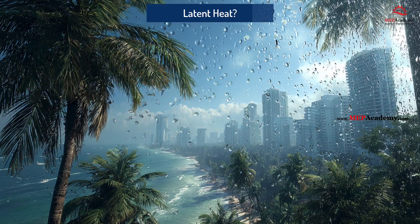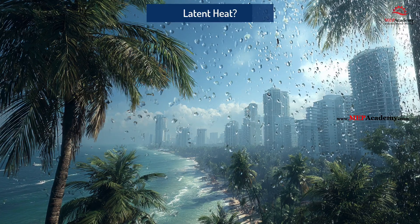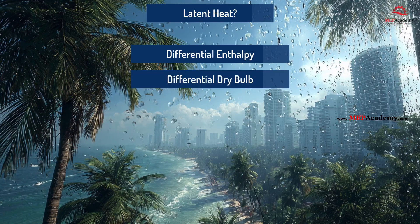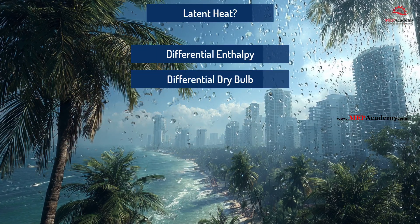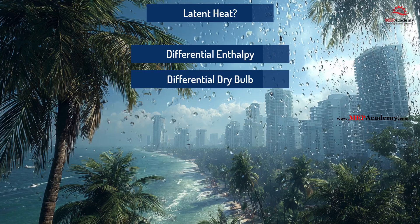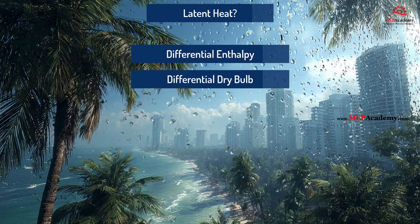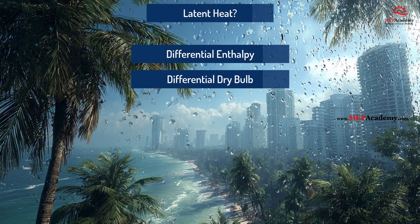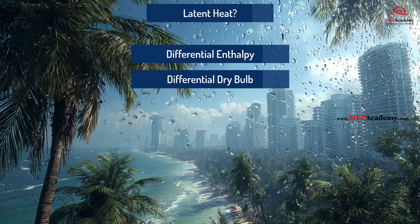In those cases, a more accurate approach is to use differential enthalpy and differential dry bulb control, which evaluates both sensible and latent energy. This ensures that economizer operation does not increase cooling energy use in humid conditions.